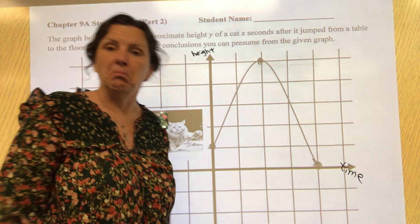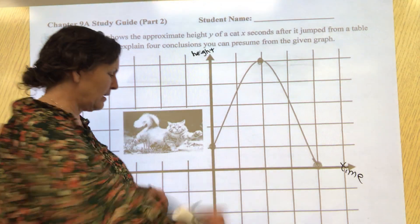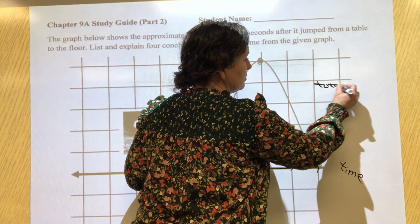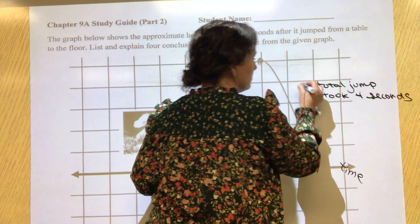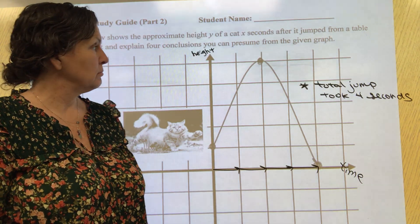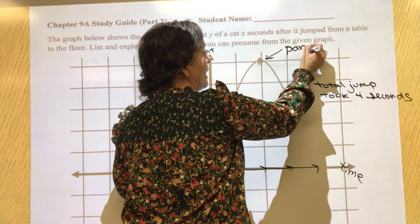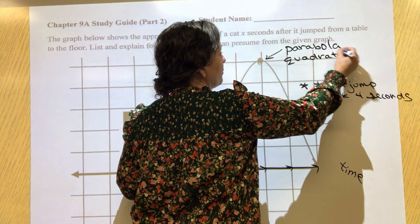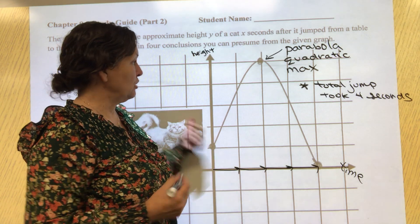If this is where the cat started, the total jump took four seconds - that's one nice conclusion. You can tell me this is a parabola, that's a good conclusion. You can tell me it's a quadratic which means it formed a parabola. You can tell me that this shape has a maximum, which is true because it's a mountain, and you can even tell me where that maximum happens - the max happens at five.